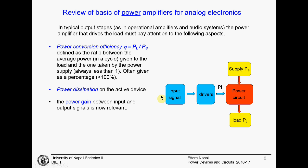It is important how much power you dissipate on the active devices. In this case, you start understanding that it is important to have a power gain between input and output. The processing chain is slightly different: you have an input signal, some drivers, then a power circuit. This power circuit takes energy from the power supply and transfers some energy to the load. The efficiency is the ratio between PL and PS, and you want this ratio as close to 1 as possible.